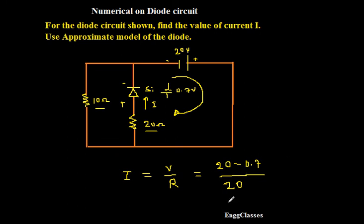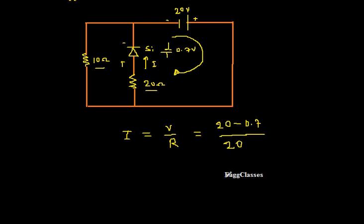Hence it is 20 minus 0.7 divided by 20, the resistance. So what is this? So I am going to get 20 minus 0.7 is going to be 19.3, that gets divided by 20. So what must be this? It is approximately equal to 1 amp.